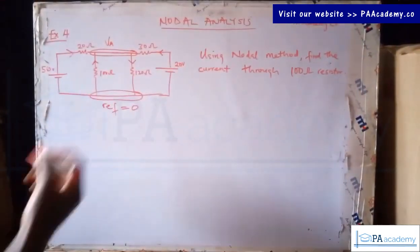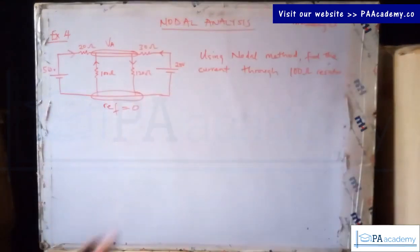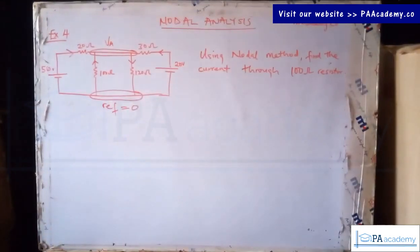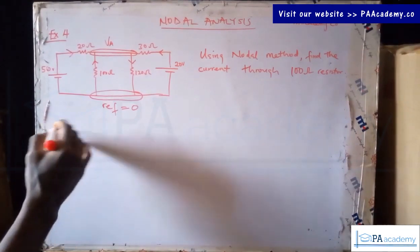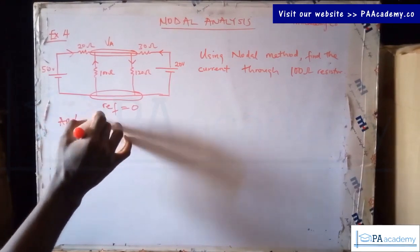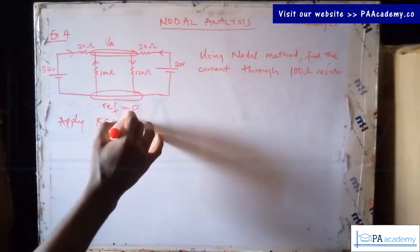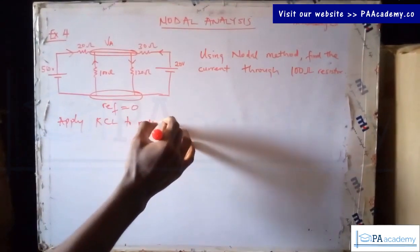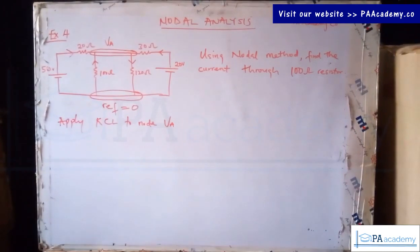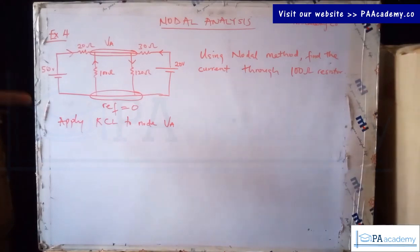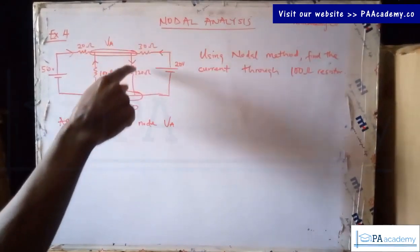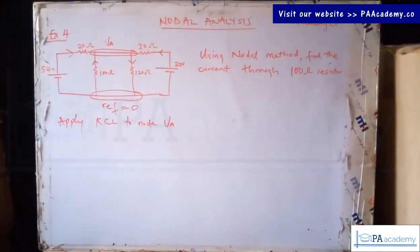You can pick current directions in any way you like; you can reverse them and still arrive at the same answer, so don't let that confuse you. Now let's apply KCL — Kirchhoff's current law — to node VA. We have three incoming currents entering VA, and one outgoing current leaving VA.